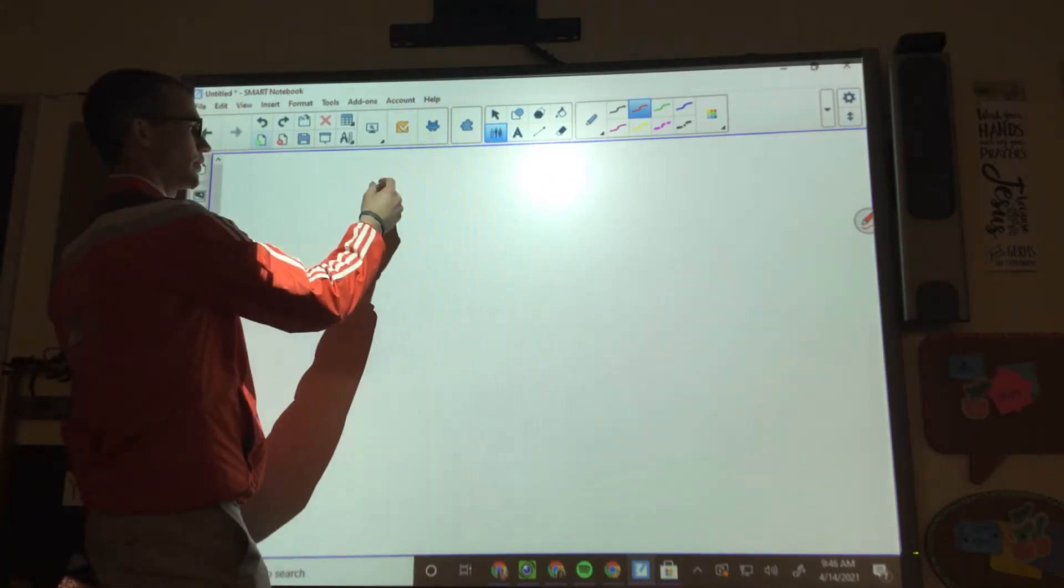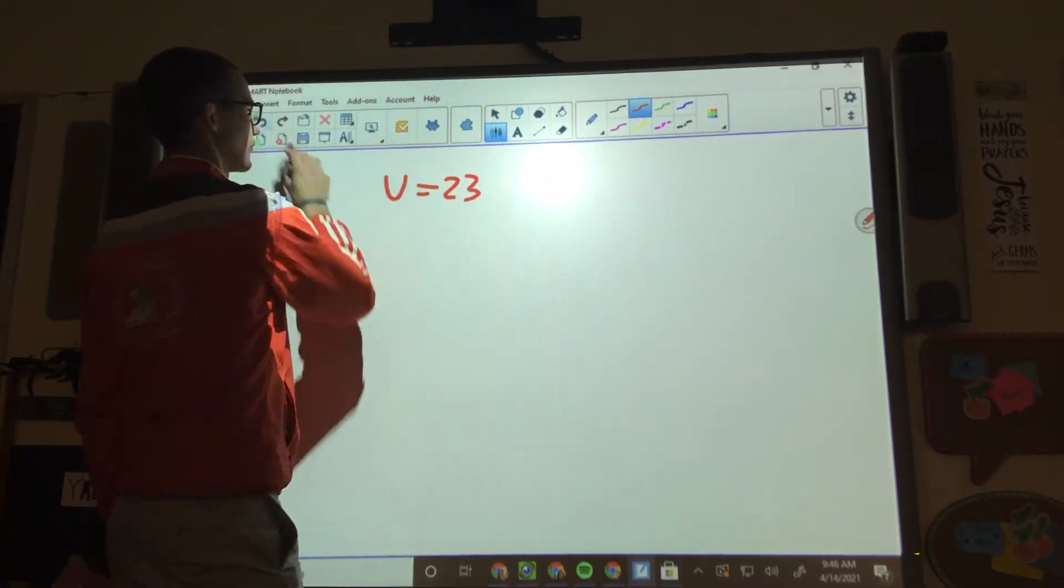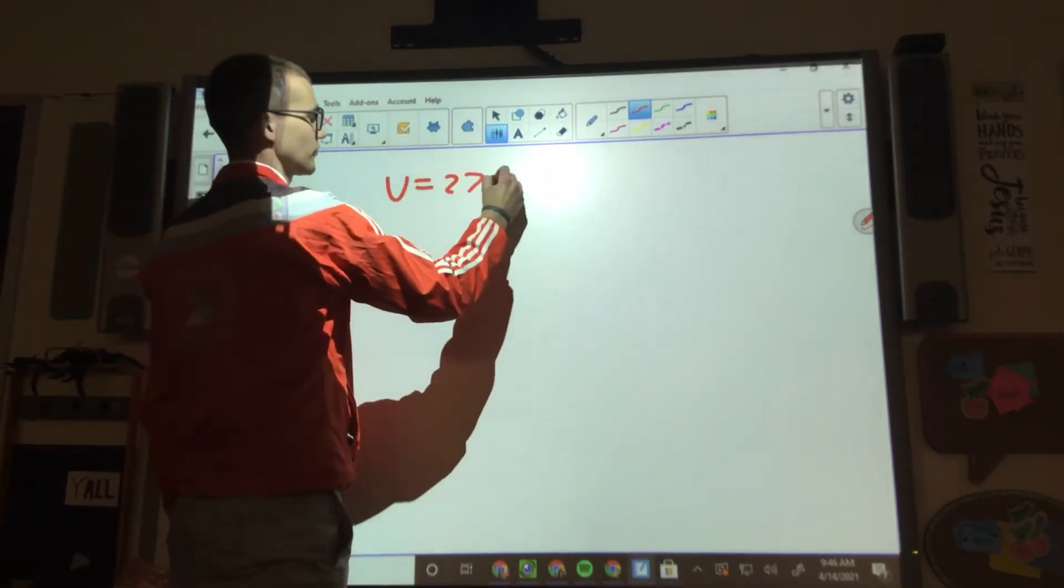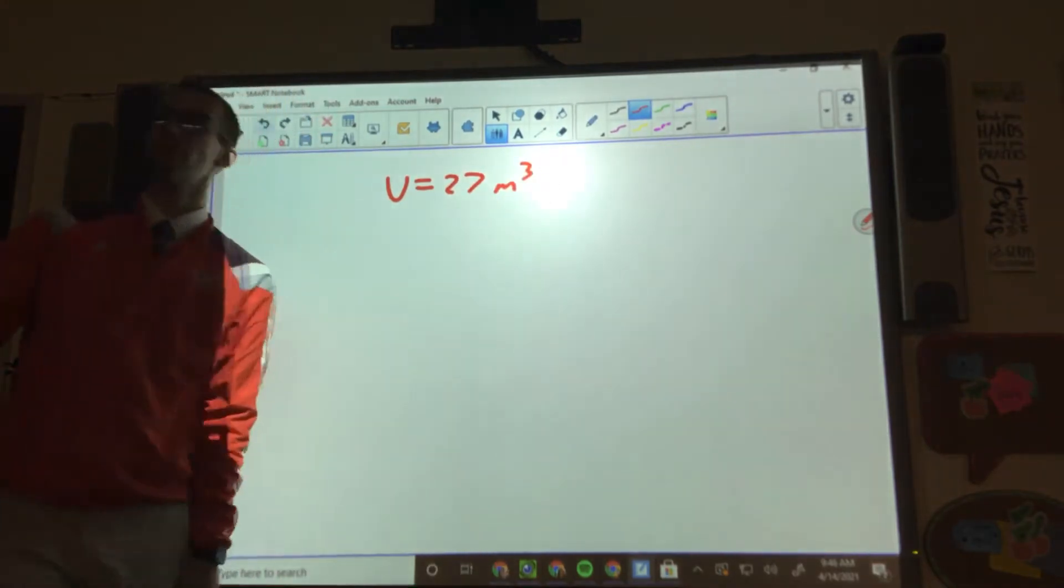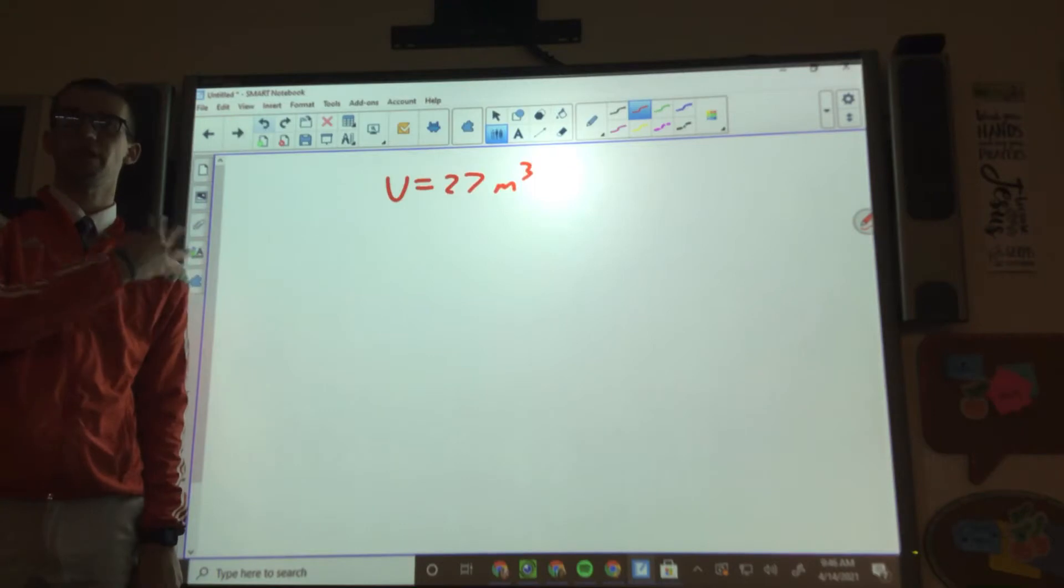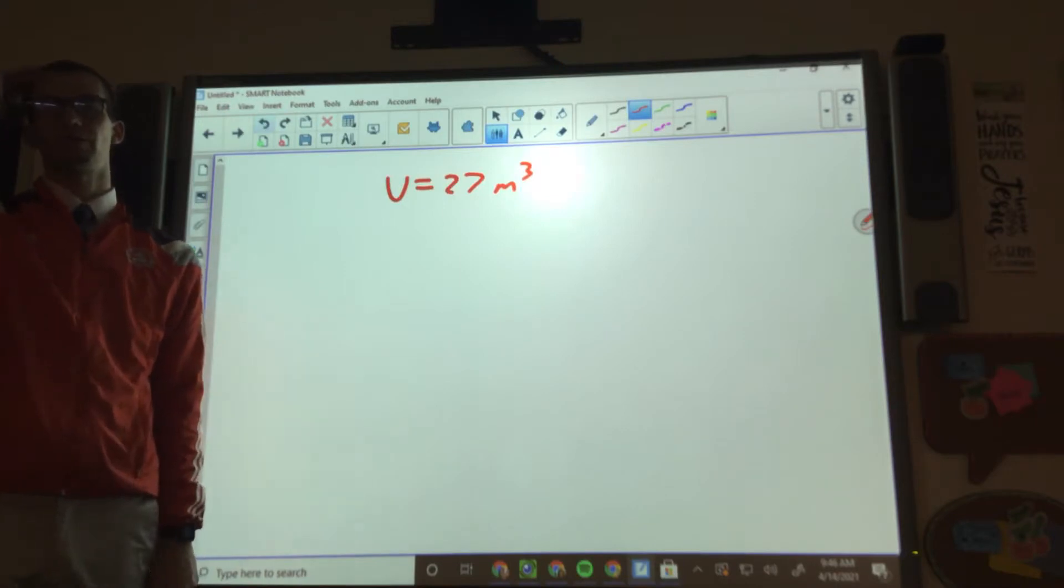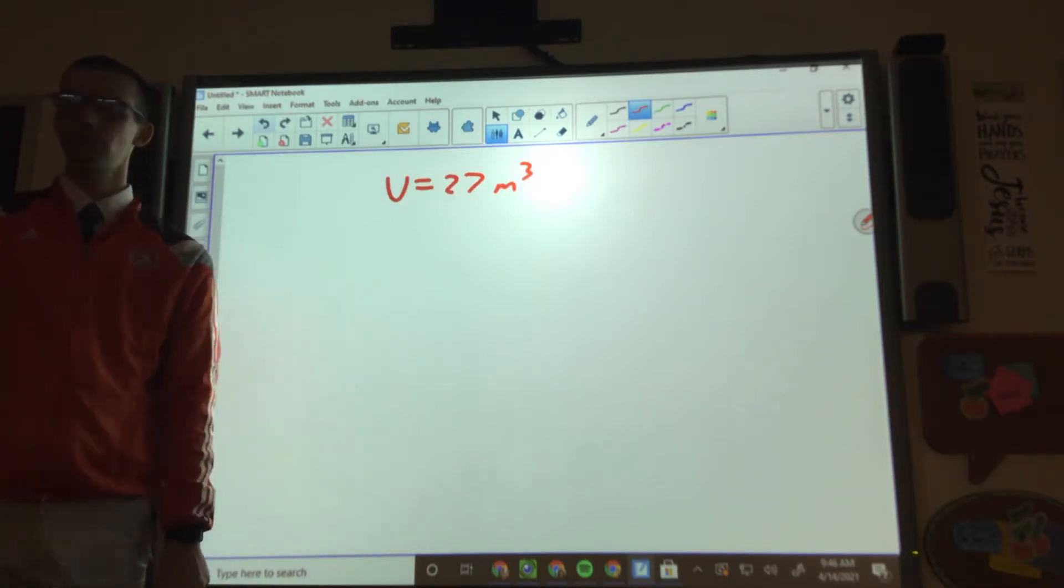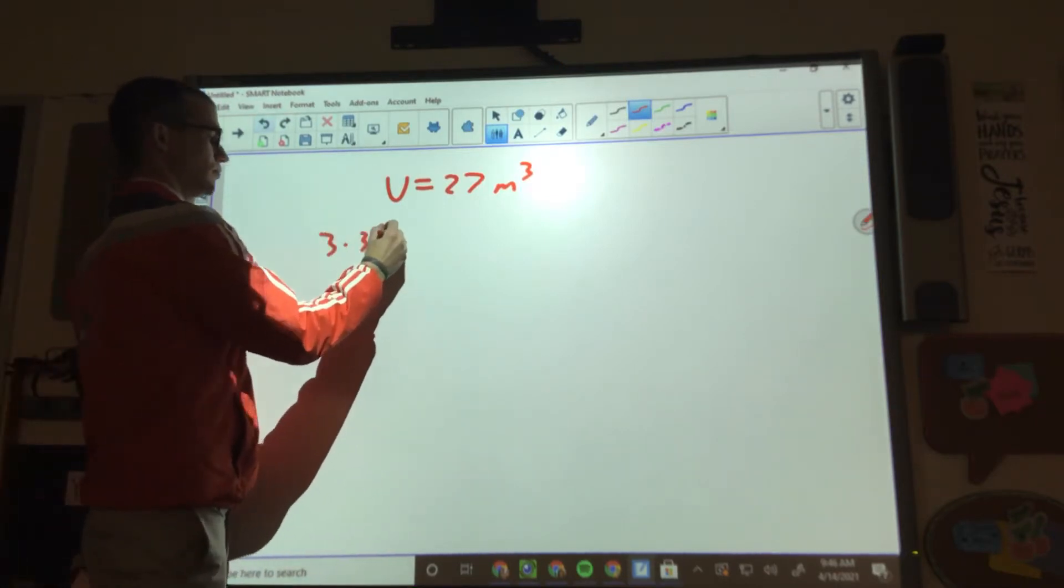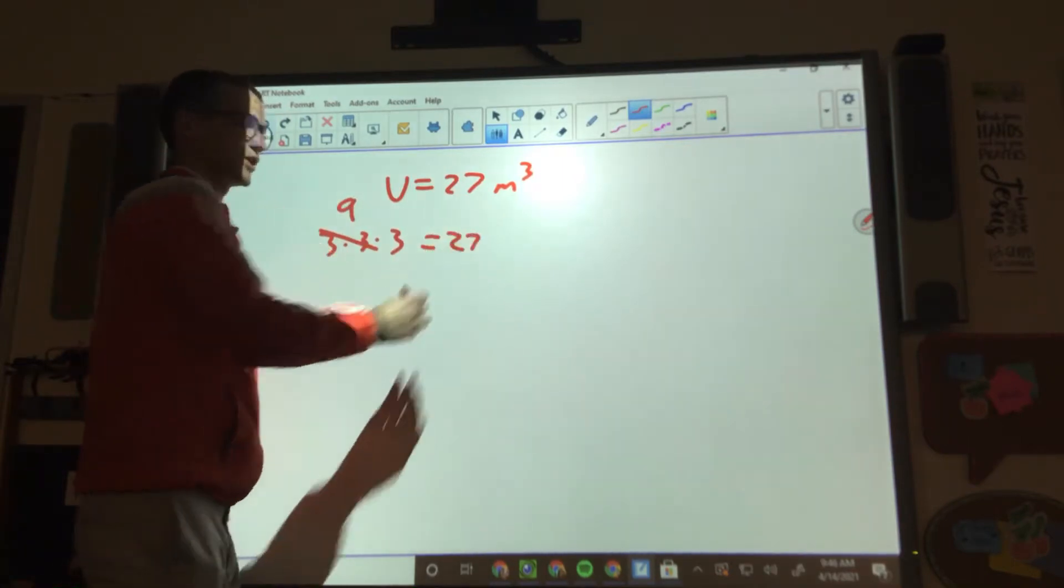So basically what they're telling you is the volume is 27 meters cubed. You need to find what number times that, times that, times that equals 27. Some of you might know off the top of your head that this number times this number times this number is 27. What is it? Three. Three times three is nine, nine times three is 27.